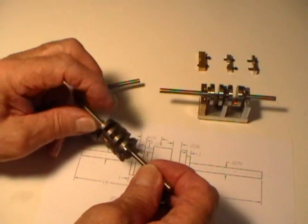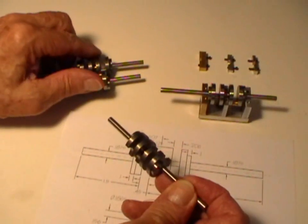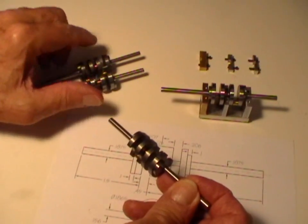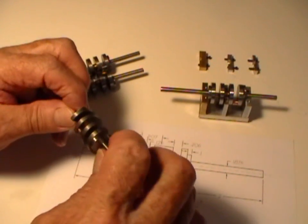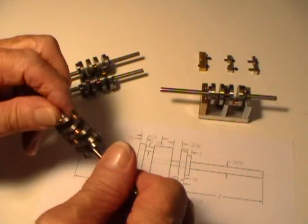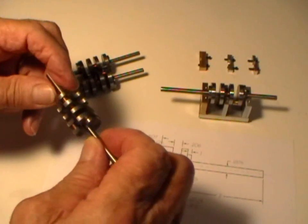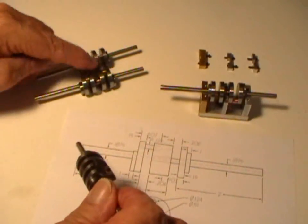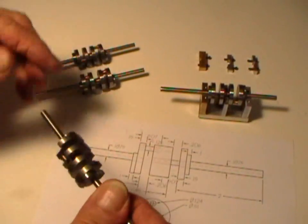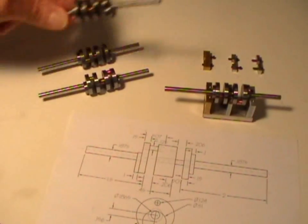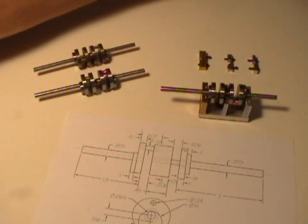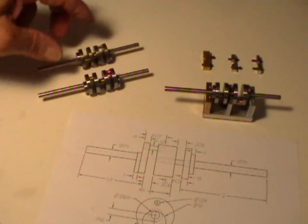The second mistake was that my chuck, three jaw chuck, had a three thou run out, and I didn't discover that until I realized that this was no good, or I realized that these ones aren't any good. I thought this was okay. Well, the point is it wasn't because of the run out. So, number one goes aside.